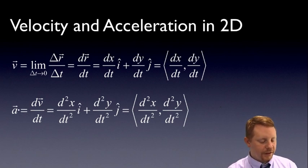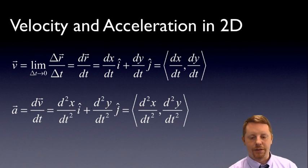Similarly, the acceleration is just going to be the derivative of the velocity, or the second derivative of the x function with respect to time times i hat, the unit vector in the x direction, plus the second derivative of the y component times the unit vector in the y direction, or j hat. Or again in bracket notation, second derivative of x with respect to t comma second derivative of y with respect to t.